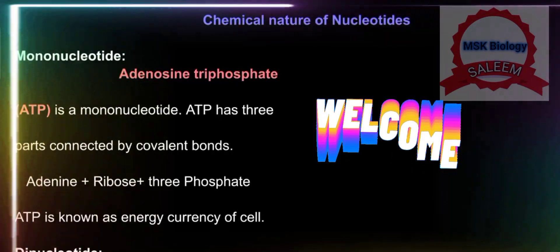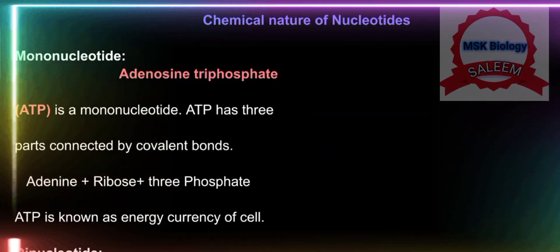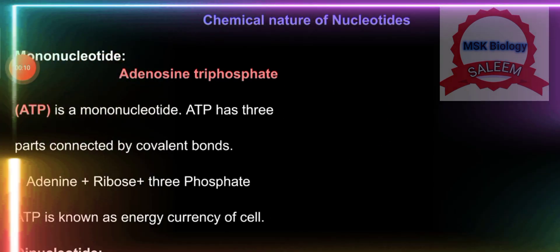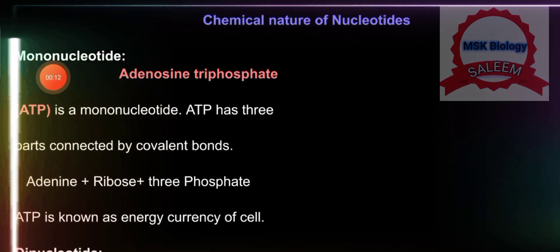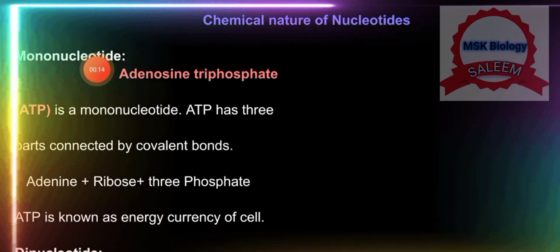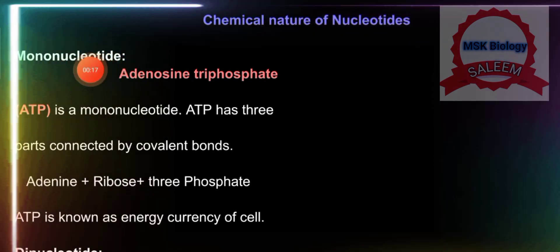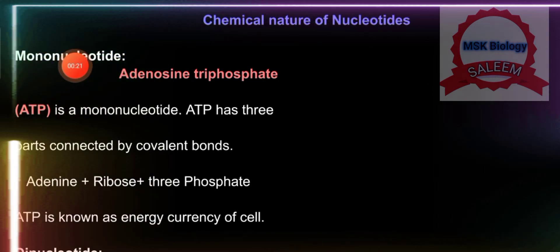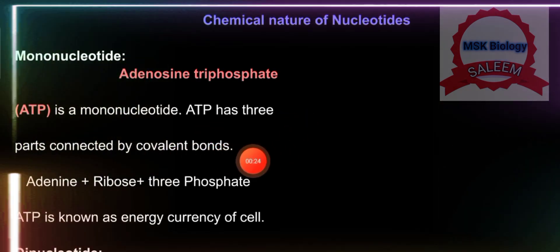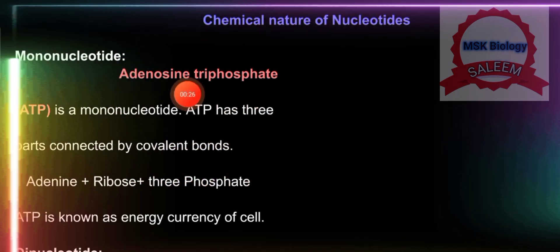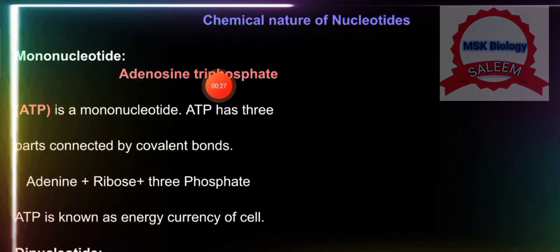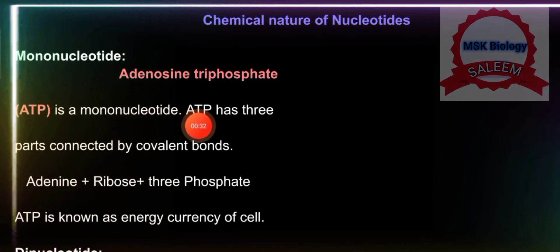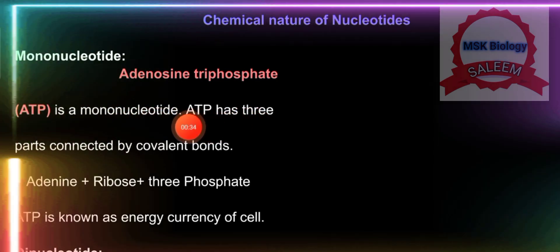Assalamu alaikum. Aaj hum study kareenge chemical nature of nucleotides. We have found three types of nucleotides. First of all, mononucleotide — mono means single nucleotide. As we already studied, nucleotide means nucleic acid which is made up of a single nucleotide — we call it a mononucleotide. The example of mononucleotide is adenosine triphosphate (ATP).